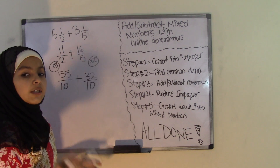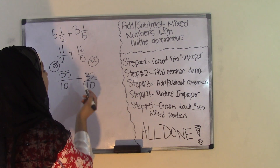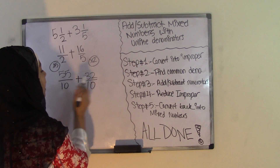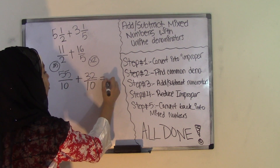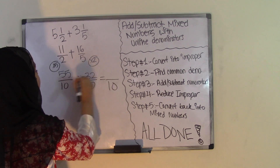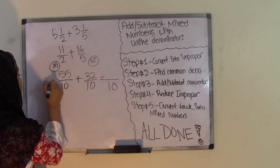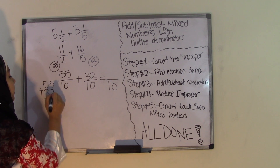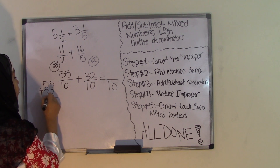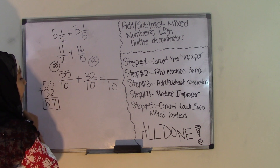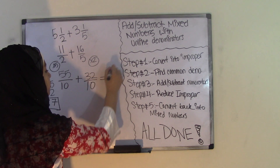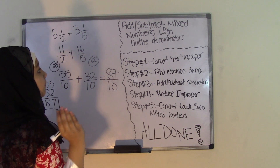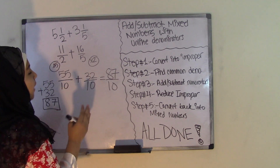Step three is add or subtract the numerators — it works the same for addition and subtraction. Since we're doing addition, add the numerators and keep the denominator the same. So fifty-five plus thirty-two: five plus two is seven, five plus three is eight, giving us a sum of 87. So we write 87 over ten.